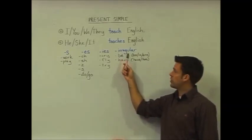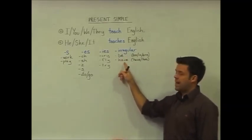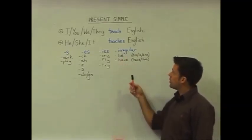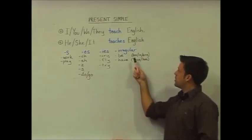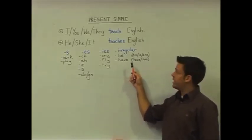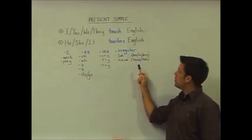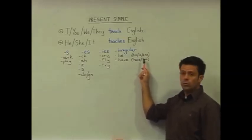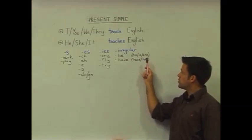Finally, we have our irregular verbs, be and have. For subject I, we use am. For the subject he, she, and it, we use is. Whereas with you, we, and they, we use are.